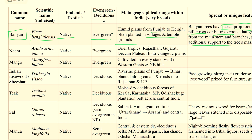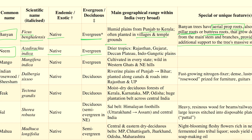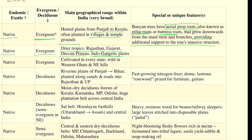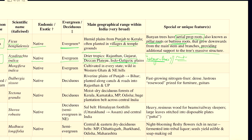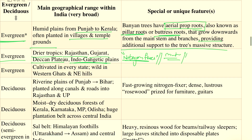Going to the Neem tree, its scientific name is Azadirachta indica. It is a native, evergreen species, usually found in the drier tropics of Rajasthan and Gujarat, along with the Deccan Plateau and Indo-Gangetic Plain. Coming to its special features, it is a very good nitrogen fixer. It is also a multi-purpose tree — a chemical called Azadirachtin is obtained from it, which is used as an insecticide. The twigs are also used as brushes. Neem tree is also a very good drought-resistant tree.